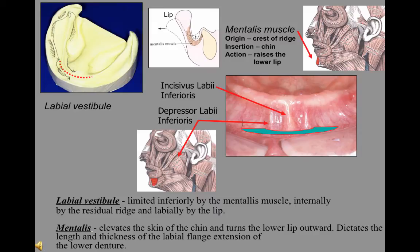Mentalis elevates the skin of the chin and turns the lip outward. The mentalis reduces the depth of the lower vestibule when it contracts. This muscle is capable of dislodging the mandibular denture, especially when the residual ridge is at the same height as the origin of the muscle. This is the case when the ridge resorbs severely, as seen on this cast. It definitely dictates the length of the extension of the labial flange, and surgical repositioning of the muscle is sometimes used to extend the flange area.